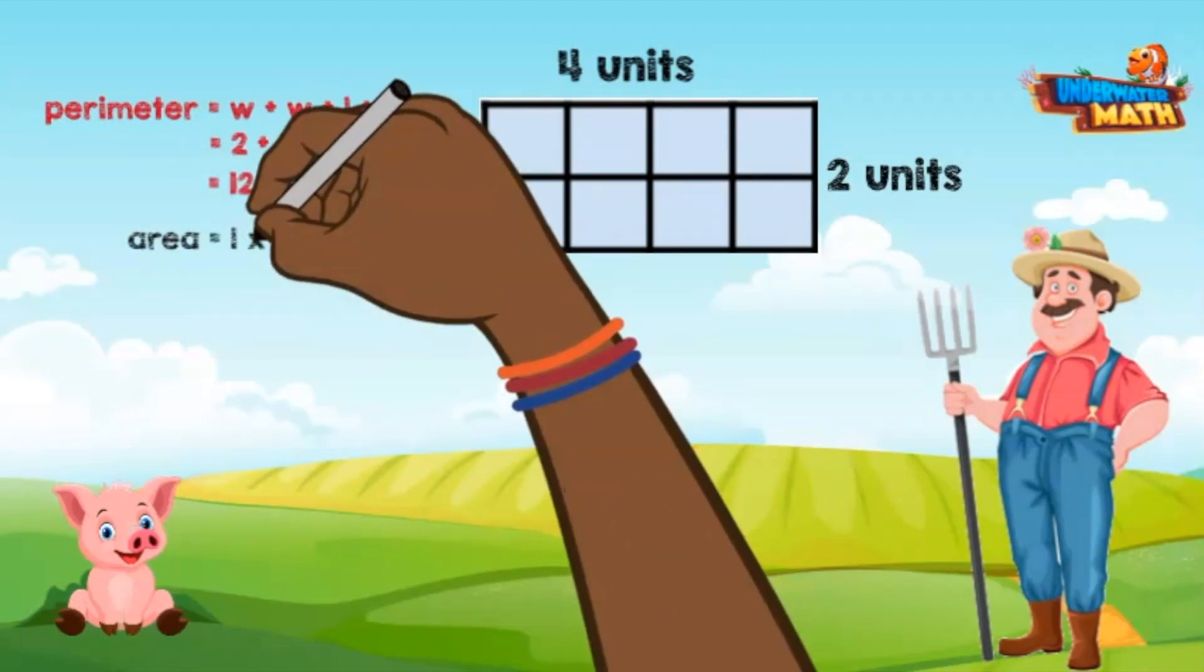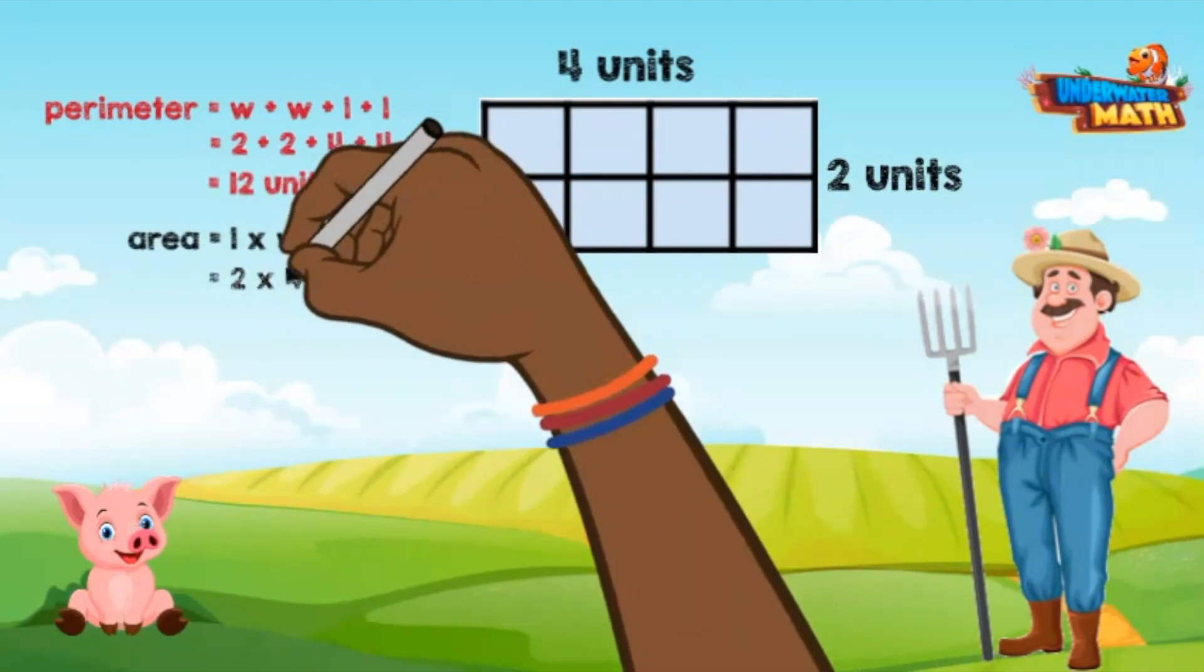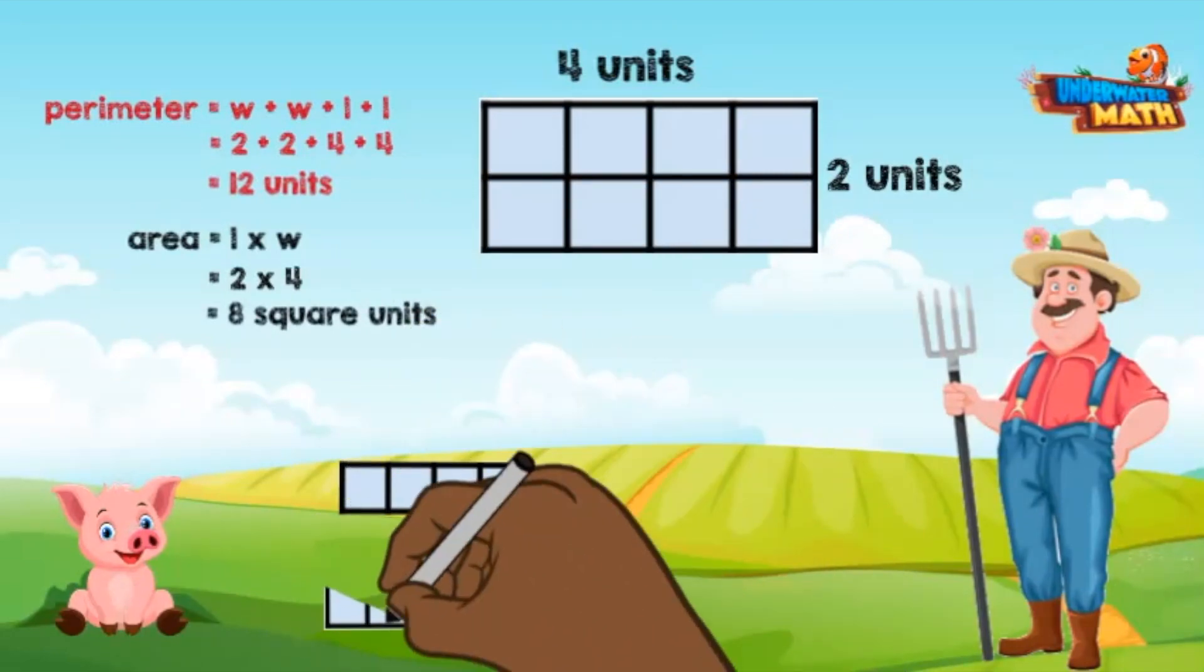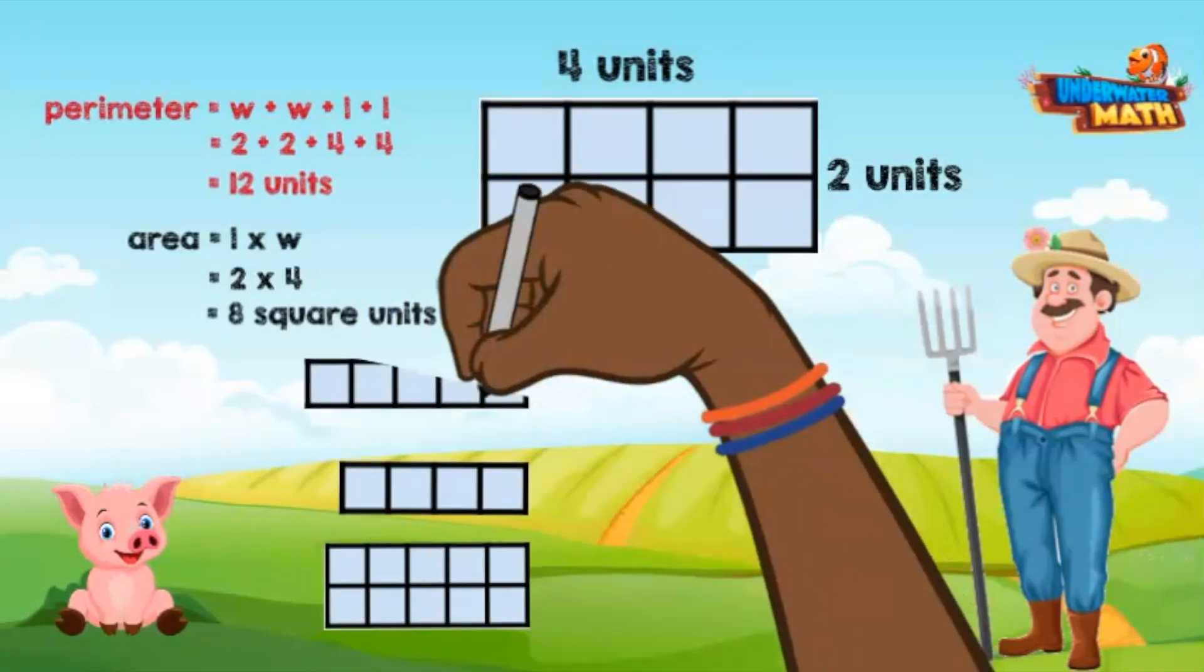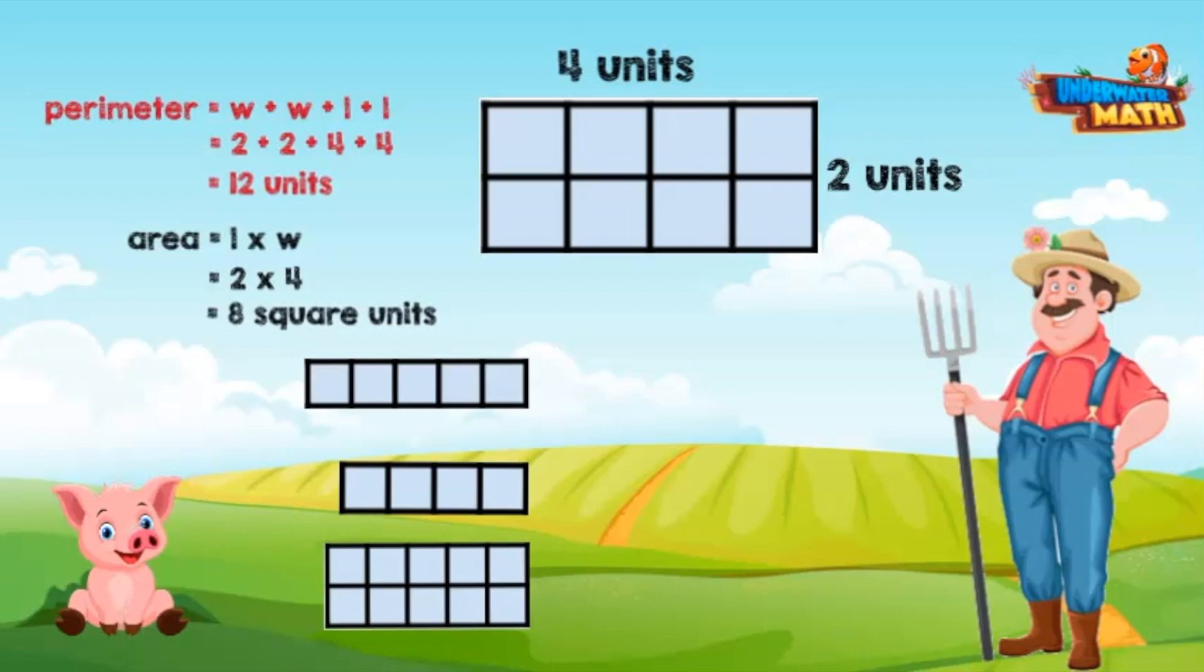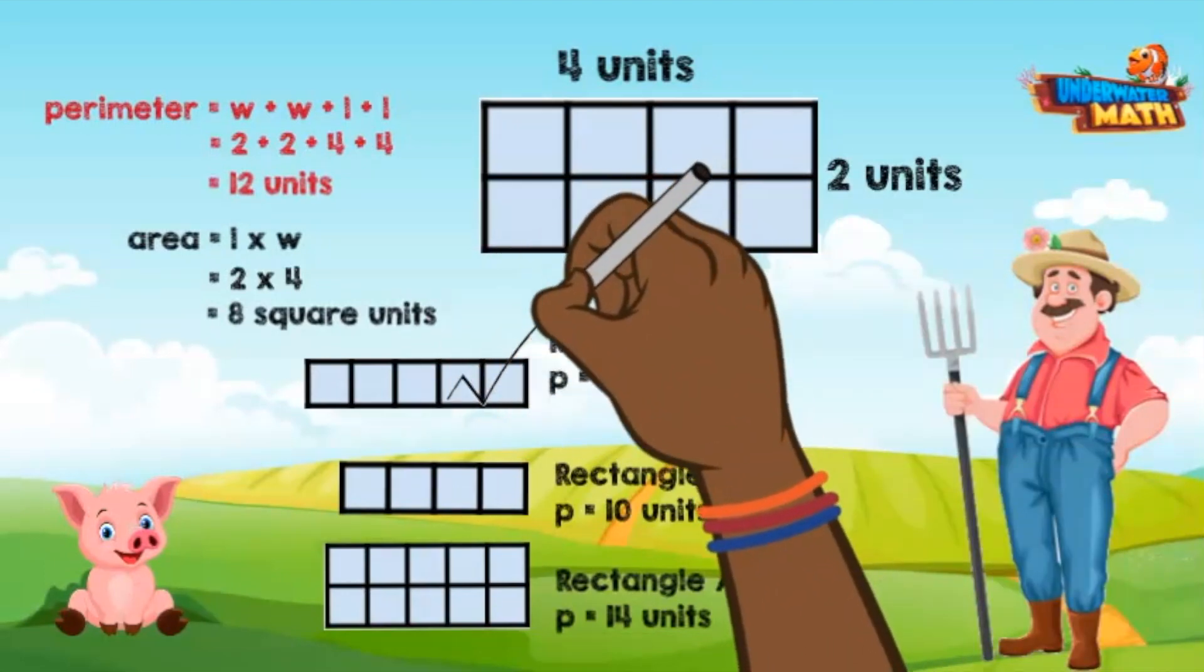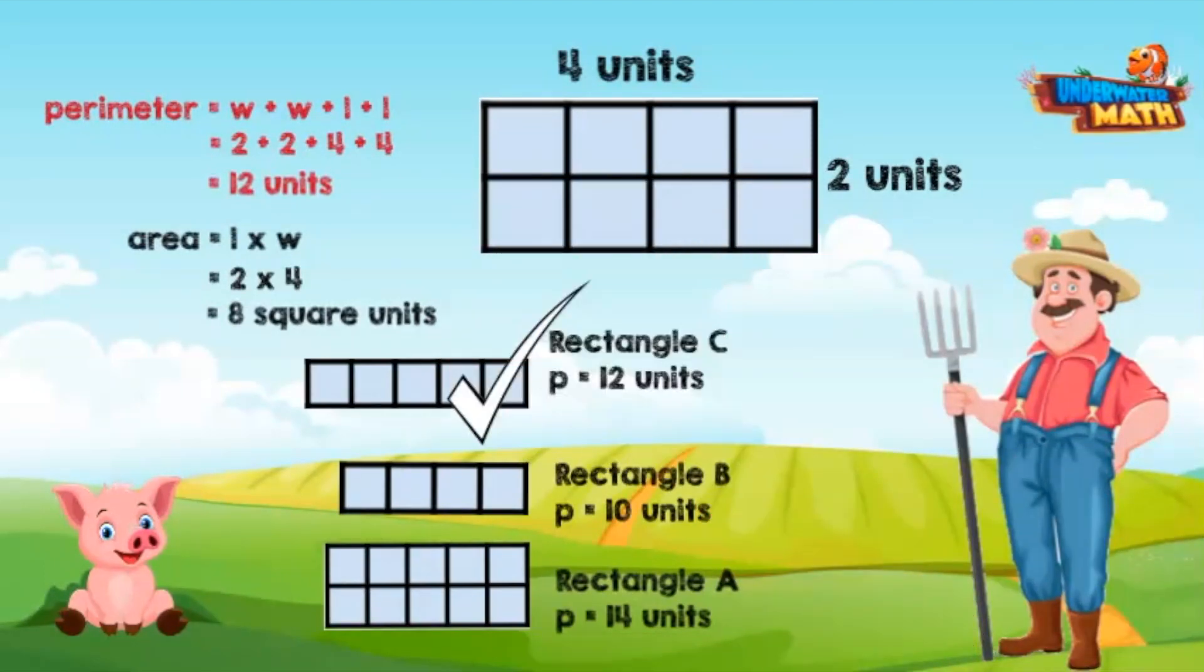To find the area we'd multiply 2 times 4, which equals 8 square units. Which of these other rectangles has the same perimeter? Farmer Willie, I'll add the lengths and widths in my head quickly. Okay, rectangle A has a perimeter of 14 units, rectangle B has a perimeter of 10 units, and rectangle C has a perimeter of 12 units. Rectangle C has the same perimeter of 12 units but an area of 5 square units.